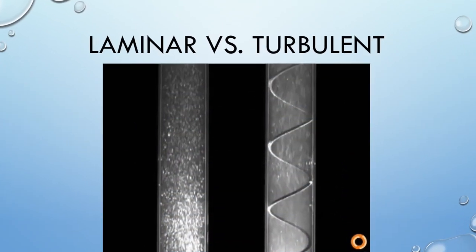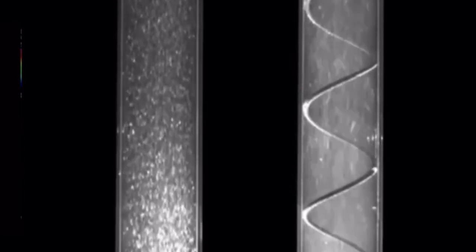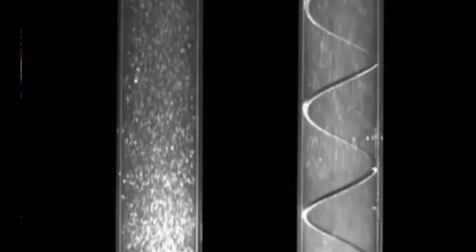As seen in the simulation, you can see that laminar flow is smooth and steady, while turbulent flow has irregular fluctuations and mixing.